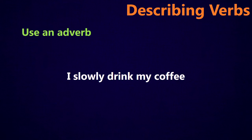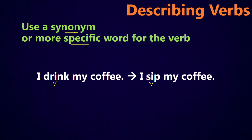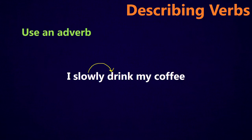You could also use an adverb to describe the verb. So you can say I slowly drink my coffee, or I drink my coffee slowly. Here, slowly is describing the action of drinking — how am I drinking it? I'm drinking it slowly, which basically means the same thing as I sip my coffee. I'm just using the adverb slowly to describe the verb drink.